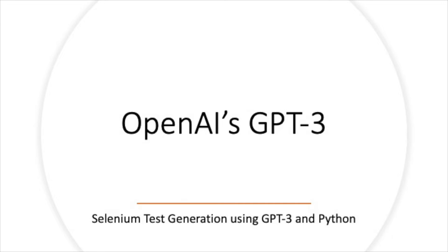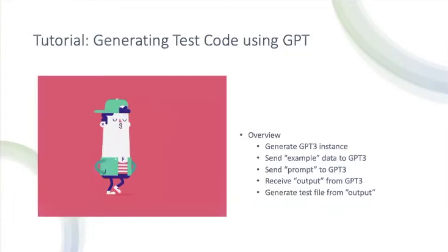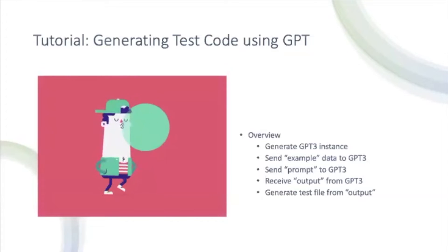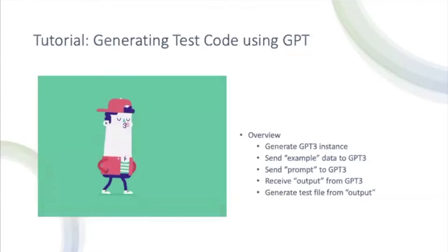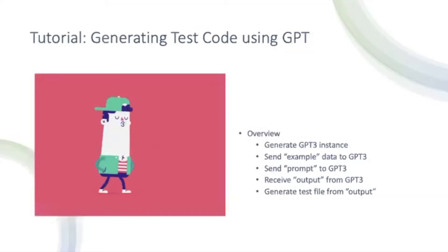Hello and welcome to the QA Underground. In today's video we will be going over a tutorial on how to automatically generate Selenium tests using GPT-3 in Python. We're going to be covering how to generate a GPT-3 instance, send example data to GPT-3, send a prompt to GPT-3, receive output from GPT-3, and generate a test file from that output. Some of the terminology used within this overview will be clarified during the tutorial.